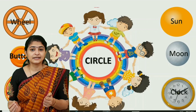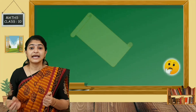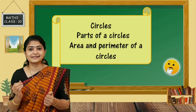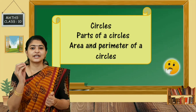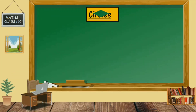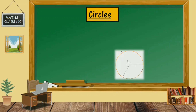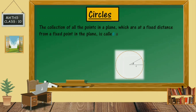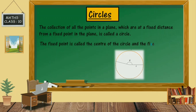What do you mean by circles? Parts of circles? Areas and perimeter of circles? So just recall the concepts. A circle is the collection of all the points in a plane which are at a fixed distance from a fixed point in the plane. That fixed point is called the center of the circle, and the fixed distance is called the radius of the circle.